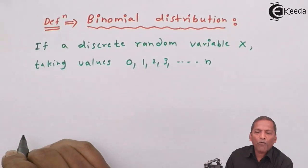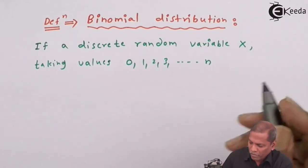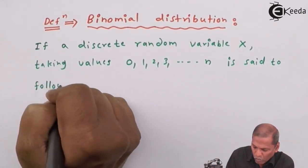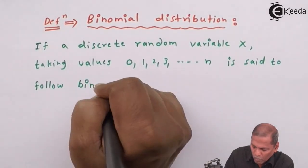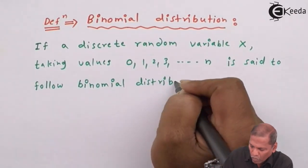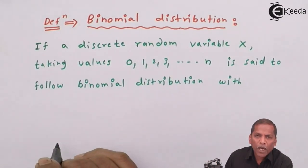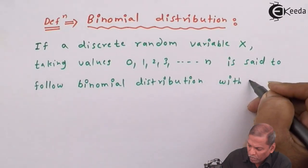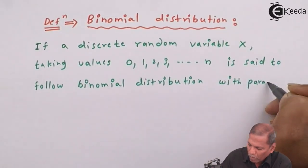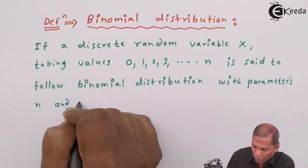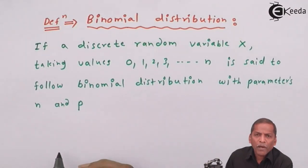is said to follow binomial distribution with parameters n and p, then its probability mass function is given by